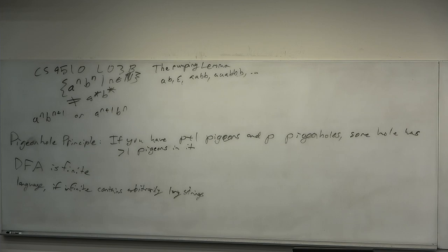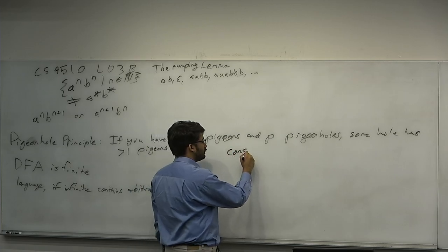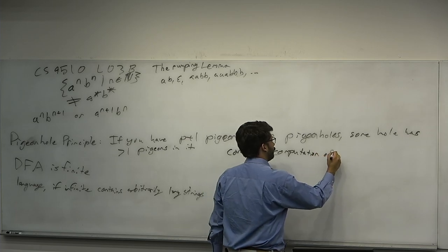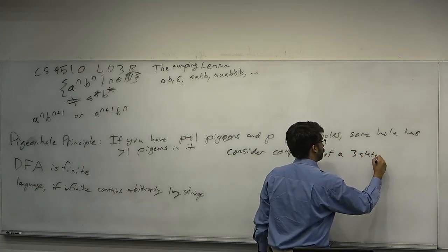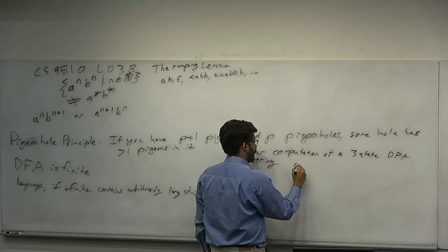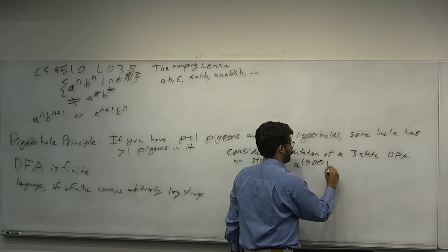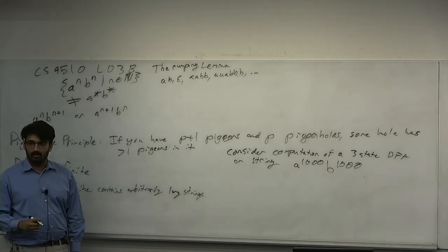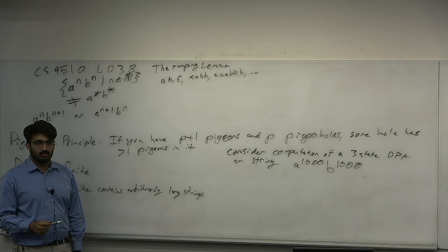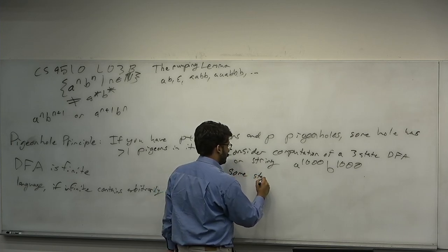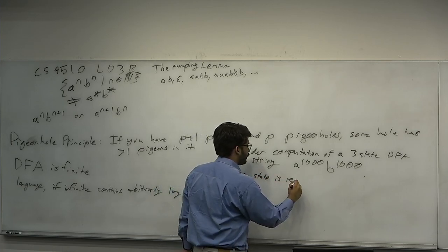Consider the computation of a small DFA on a really long string — consider a three-state DFA on a string like A^1000 B^1000. What do you know about the computation of a small DFA on a long word? Some state is repeated in the computation.